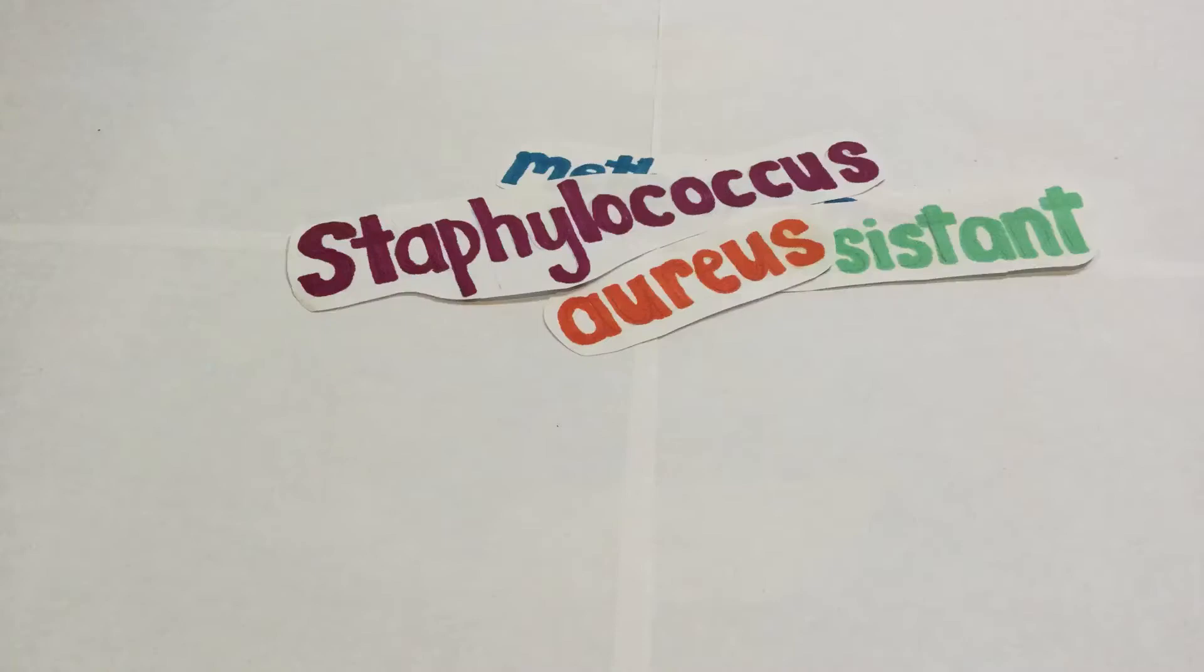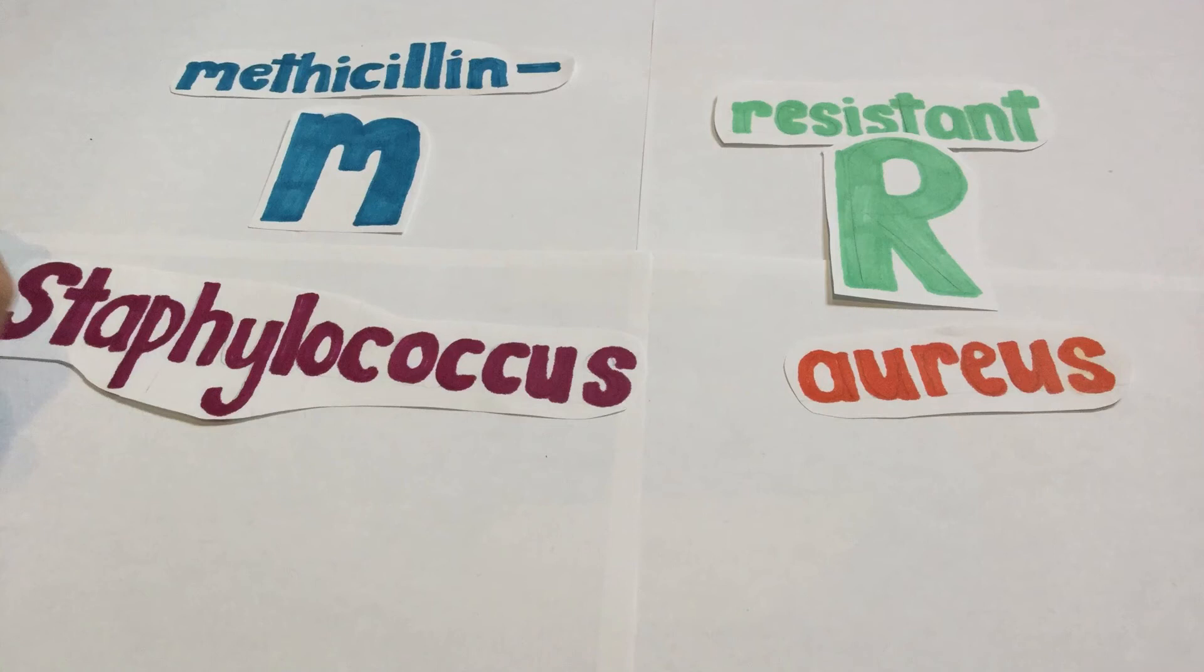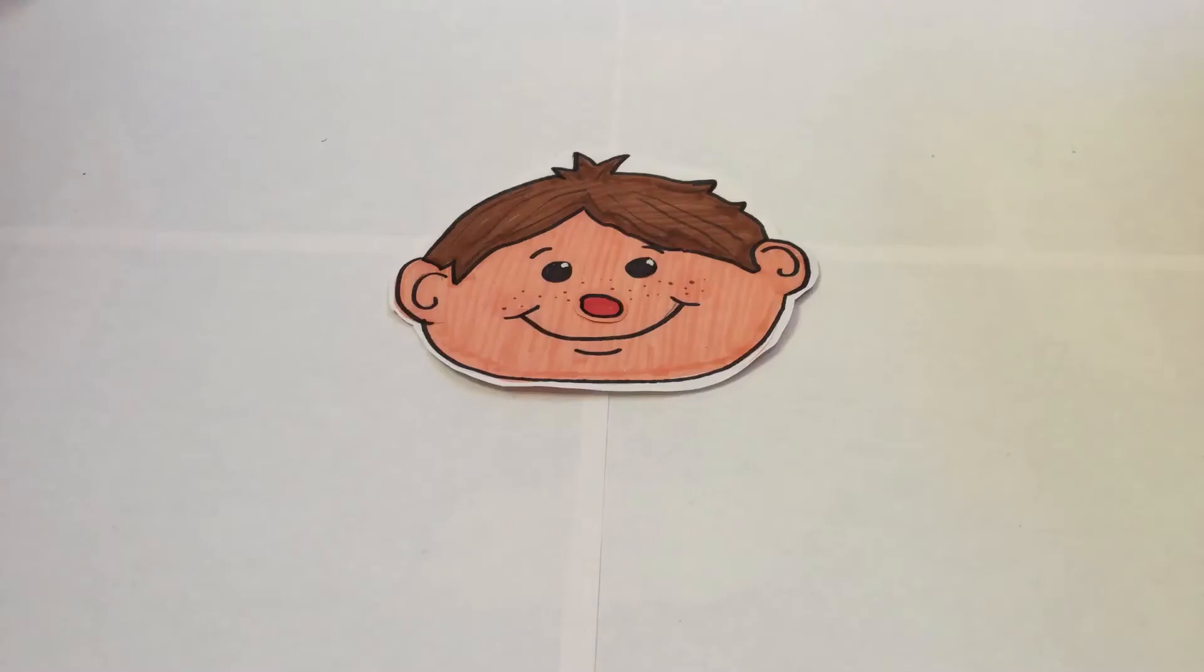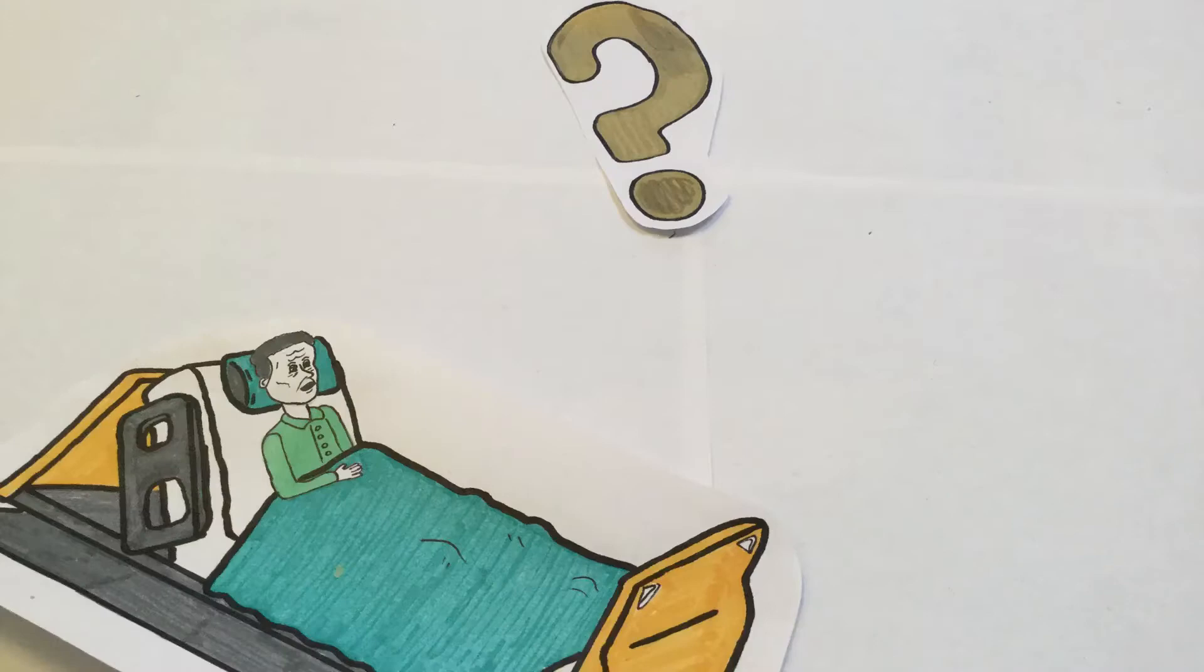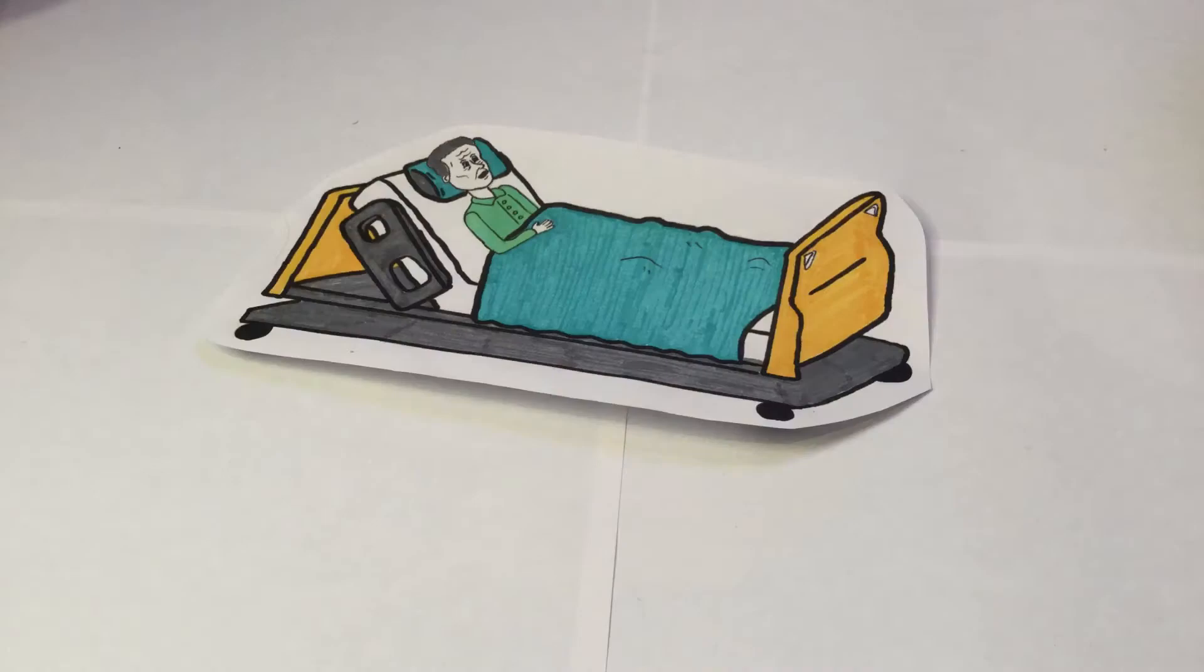One of the most common superbugs is Methicillin-resistant Staphylococcus aureus, also known as MRSA. Many healthy humans have staph in their nose and on their skin. Normally it doesn't cause any harm, but it can get infected. This infection tends to multiply in hospitals, often after surgery.